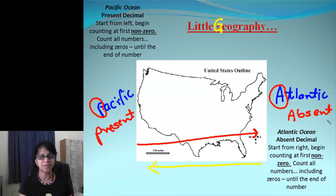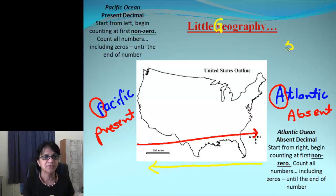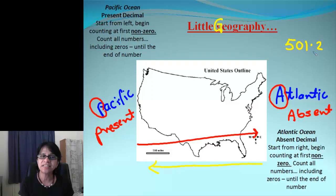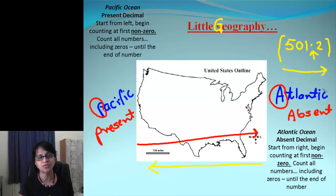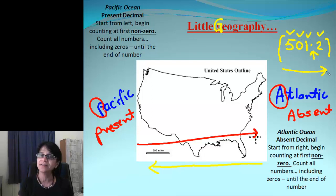Let's do a simple practice problem. Say we have the number 501.2. The decimal point is present, so you are going to walk from Pacific to Atlantic — left to right. You start counting with the first non-zero number. 5 is not zero, so that becomes 1. Then you count each digit. That gives sig figs for the number as 4.